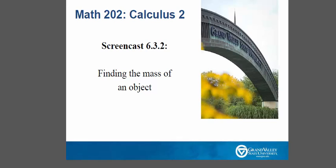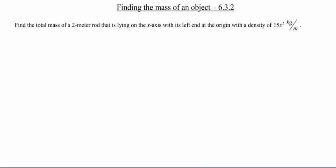Hello and welcome to a screencast about finding the mass of an object. Today we are going to work on finding the total mass of a two meter rod that's lying on the x-axis with its left end at the origin. This rod has a density that follows the function 15x² kilograms per meter.